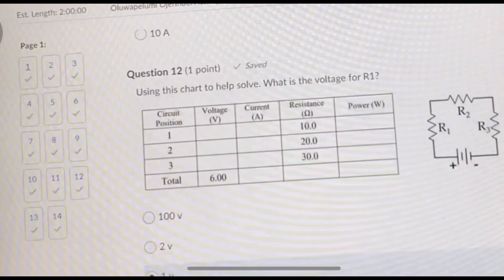Number 12: what is the voltage for R1? We know that resistance is 10, 20, 30, 60. Current is 0.1, 0.1, 0.1, 0.1, and we know the total voltage is 6. For voltage at R1, we know that voltage is I times R. You just multiply your current by your resistance. Current at position one is 0.1 throughout, so 0.1 times 10 is 1. So the voltage for R1 is 1 volt.